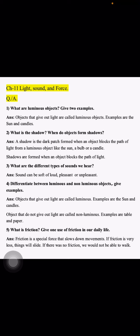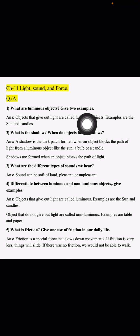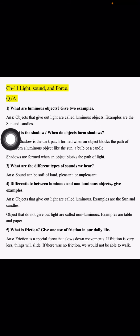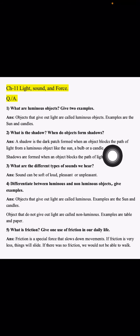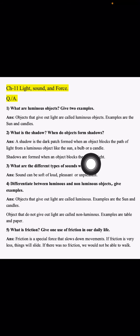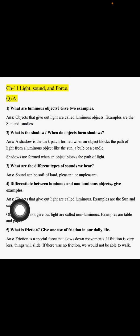Now I am going to repeat the answers. Check pronunciation and spelling and correct if needed. Question one: What are luminous objects? Objects that give out light are called luminous objects; examples are the sun and candles. Question two: What is a shadow? A shadow is the dark patch formed when an object blocks the path of light from a luminous object like the sun, a bulb, or a candle. Shadows are formed when an object blocks the path of light.